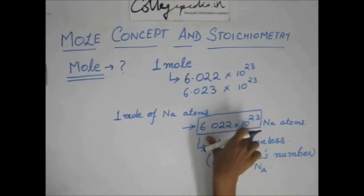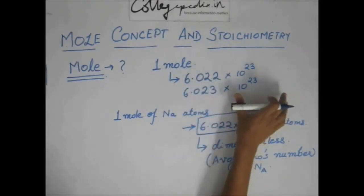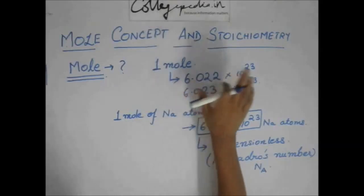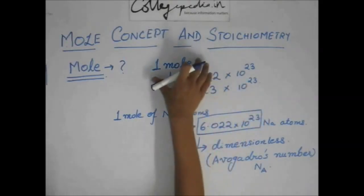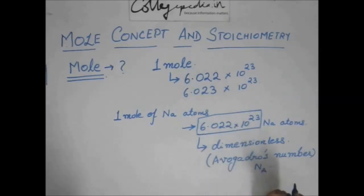So, this quantity is a constant. It does not change because its value is defined as 6.023 into 10 to the power 23 particles existing in one mole of anything. So, this is a constant dimensionless constant, which is called the Avogadro's number.